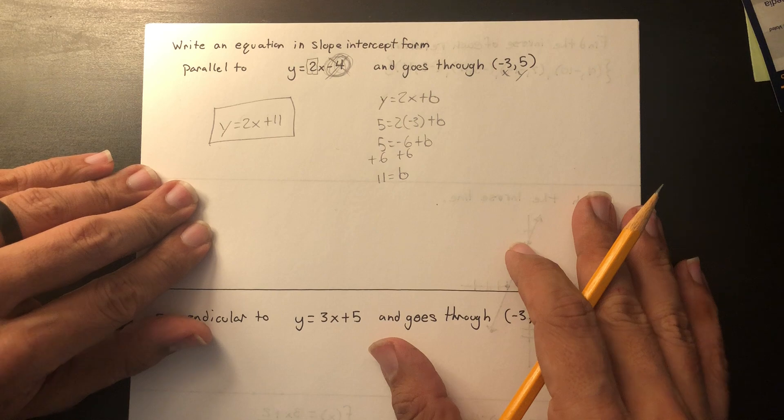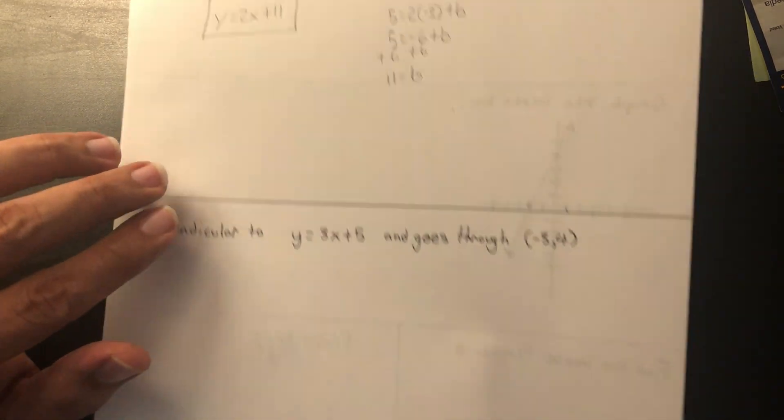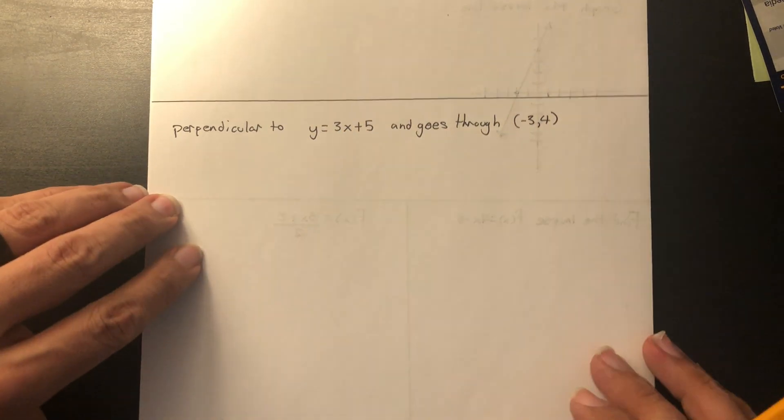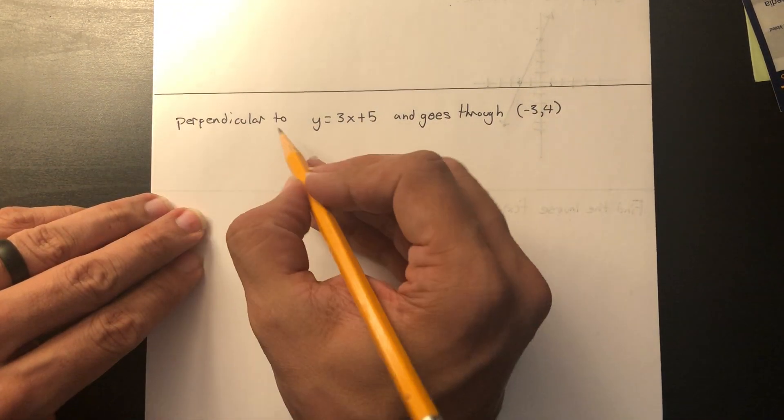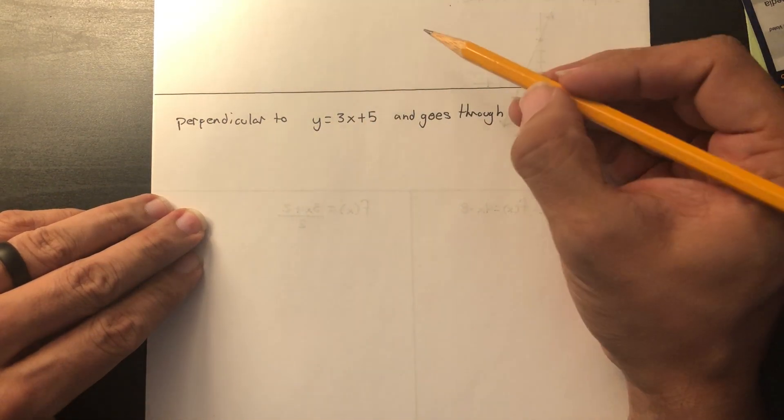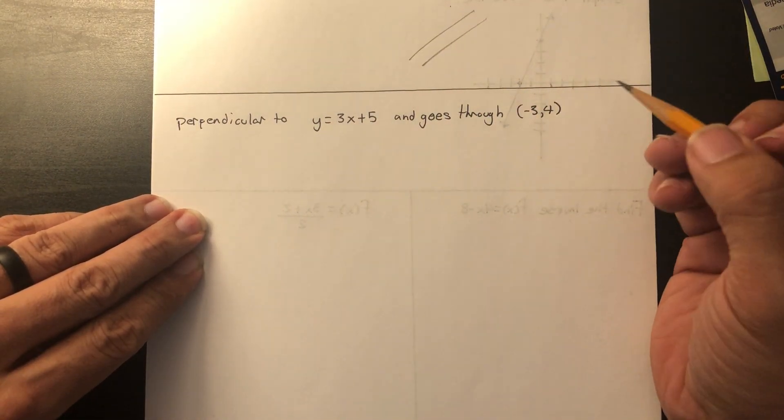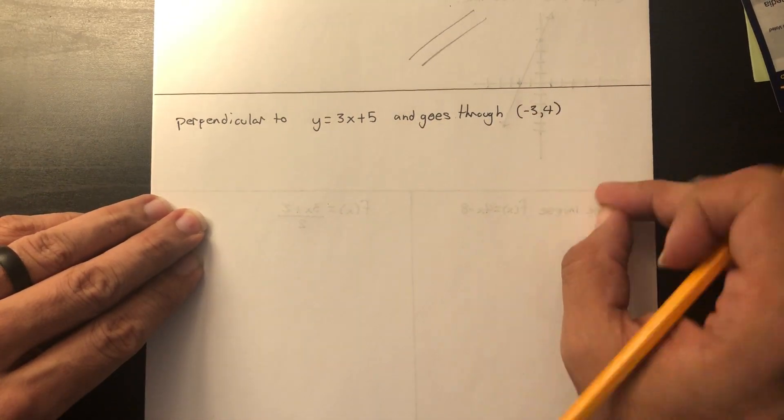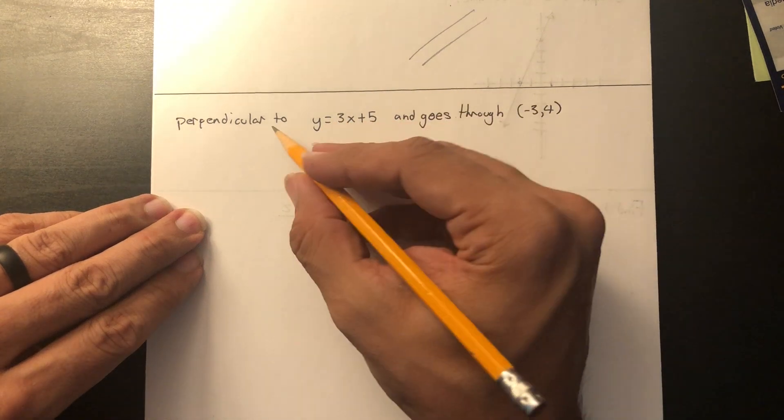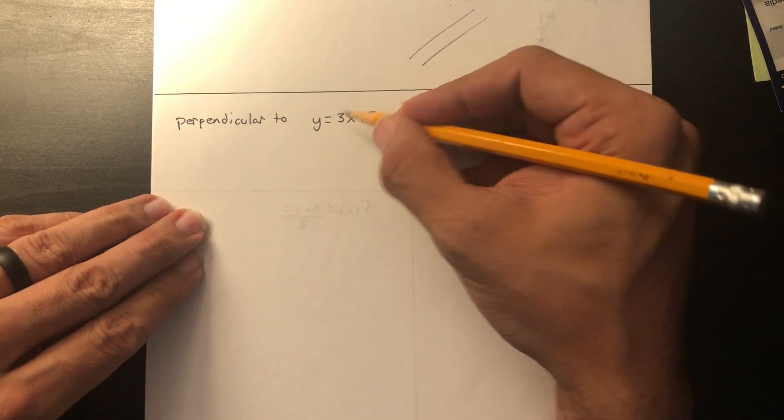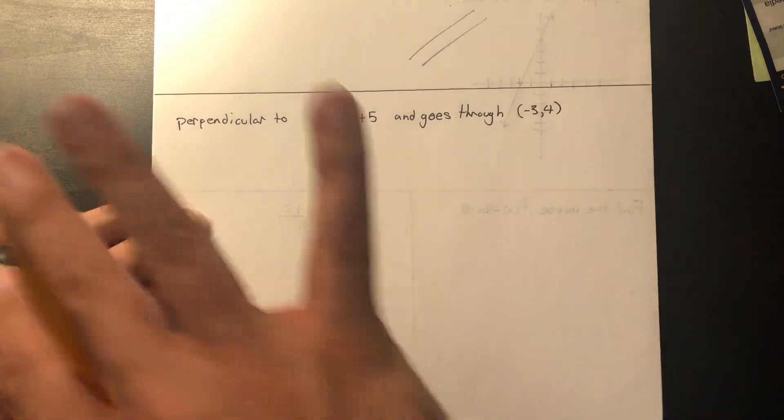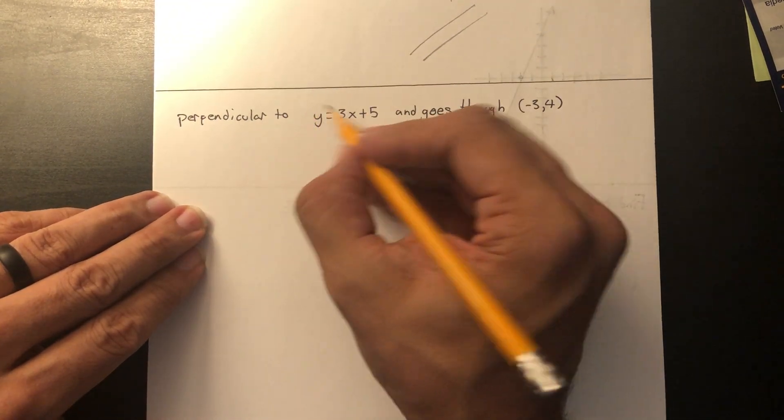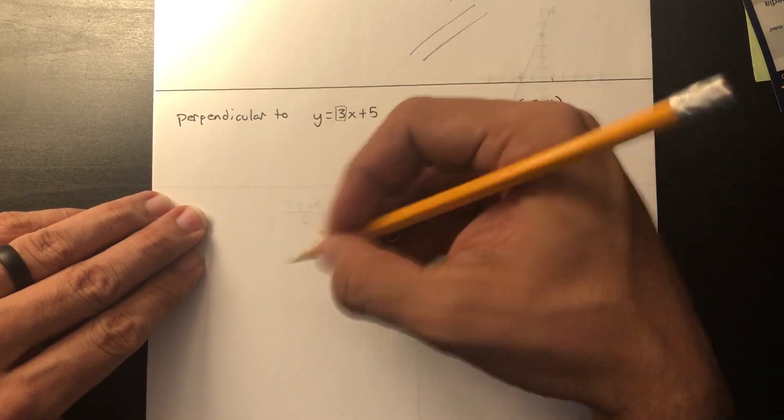So now that you know that 11 equals b and you know the slope, the equation is y equals 2x plus 11. Now let's focus on this. Now we're looking for something perpendicular. Parallel have the same slope, so they go up at the exact same rate. Perpendicular intersect at 90 degrees, so it's a very specific slope that it has to have.